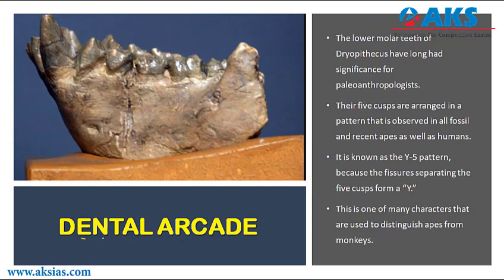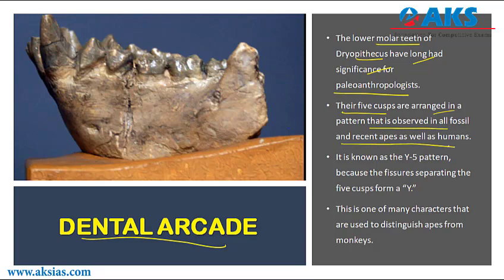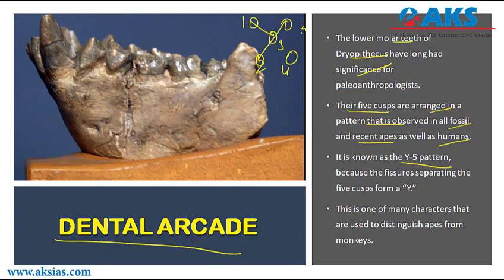Regarding their dental arcade: the lower molar teeth of Dryopithecus have long had significance for paleoanthropologists. Their five cusps are arranged in a pattern observed in fossils and recent apes as well as humans, known as the Y-5 pattern. In this pattern, three cusps — numbered one, three, and five — are placed on the cheek side, while cusps two and four are placed on the tongue side.